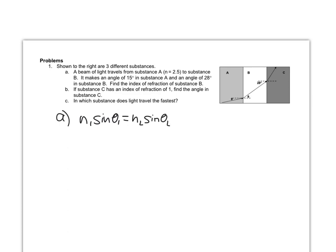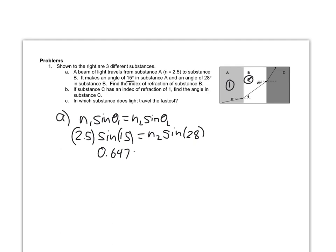We know our index of refraction in substance A, which I'll make substance 1, is 2.5. We also know the angle there is 15 degrees, so we can say 2.5 times sine of 15. That's going to be equal to our index of refraction in substance B, which is substance 2. We don't know that index of refraction, but we do know our angle there is 28 degrees. So this left side of the equation becomes 0.647, equal to N2 times the sine of 28 degrees.